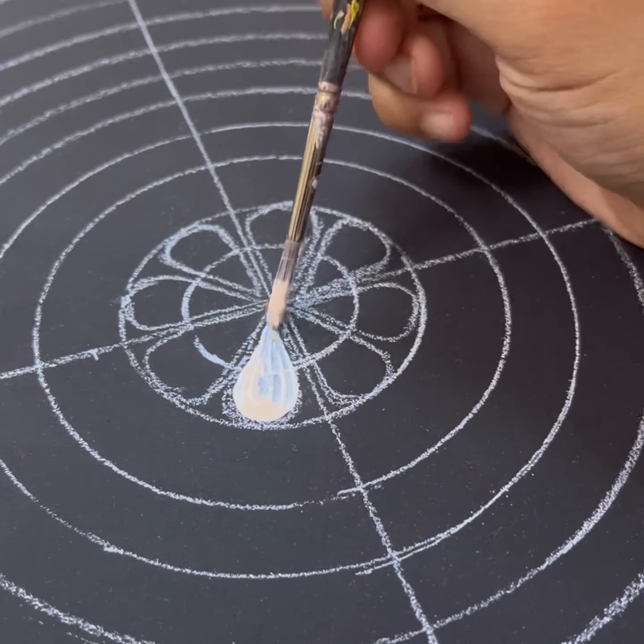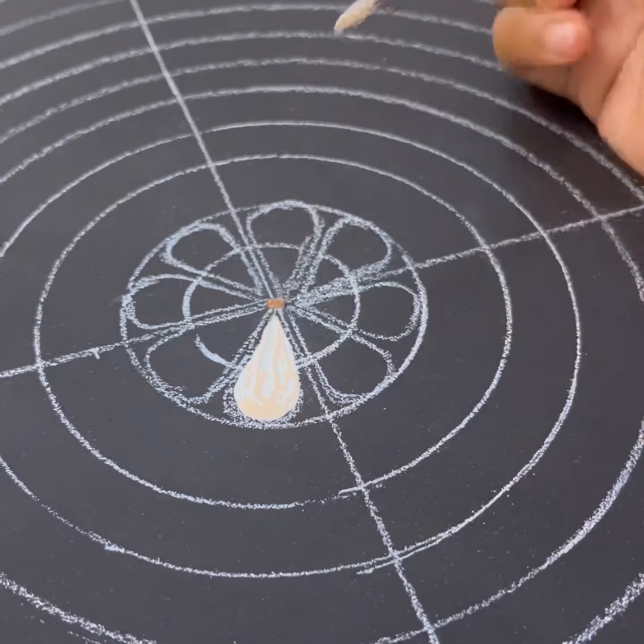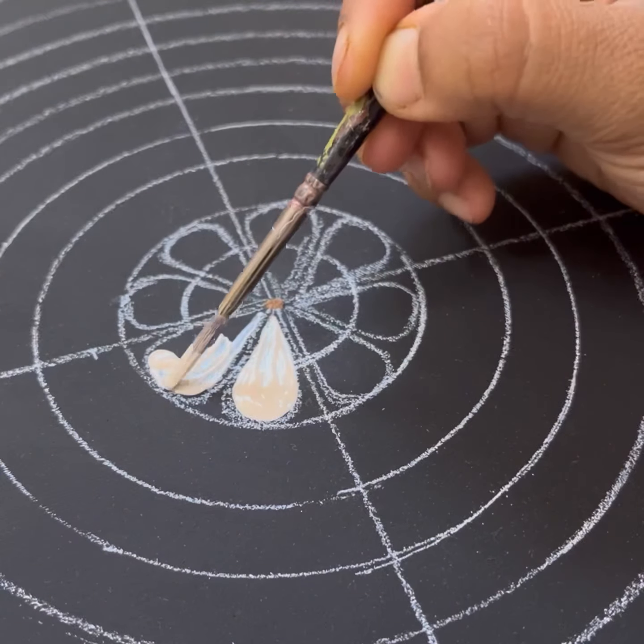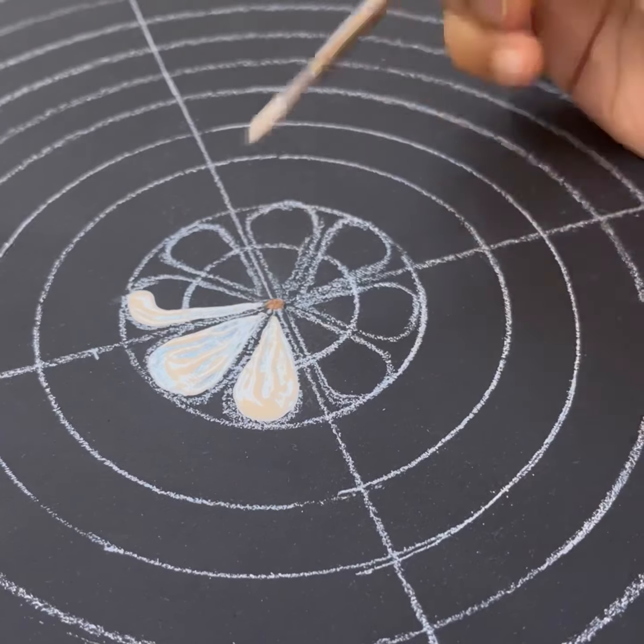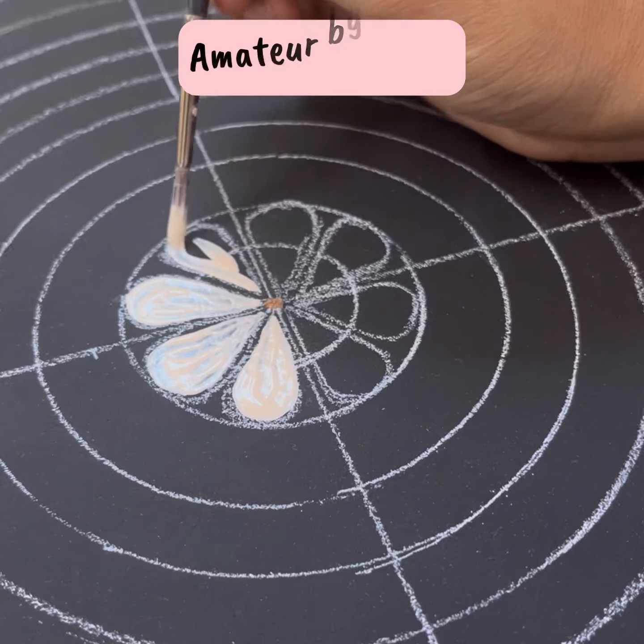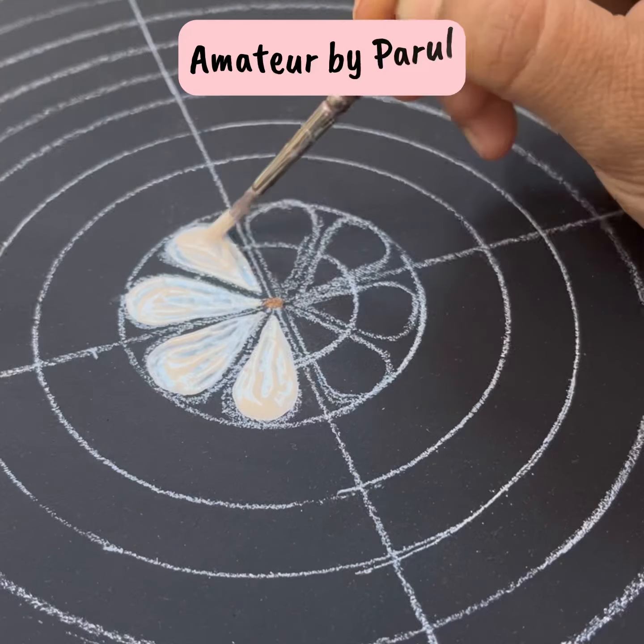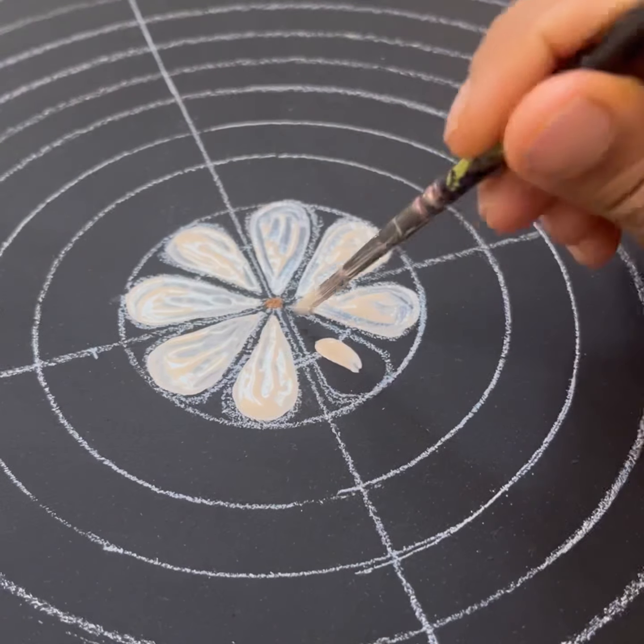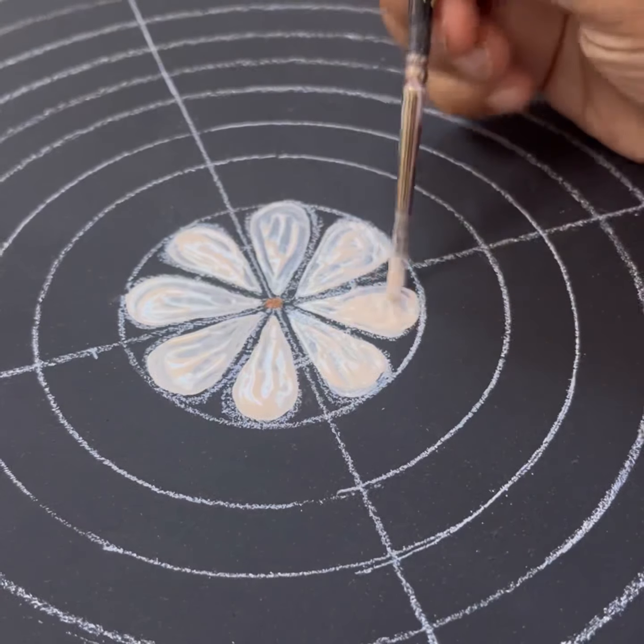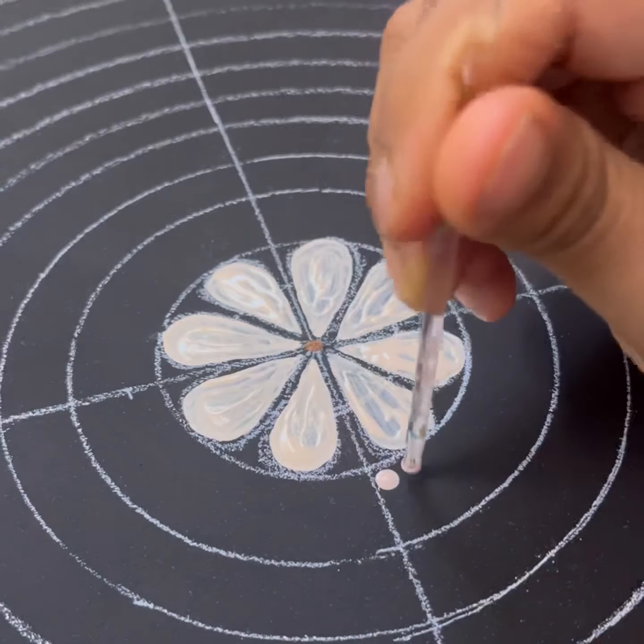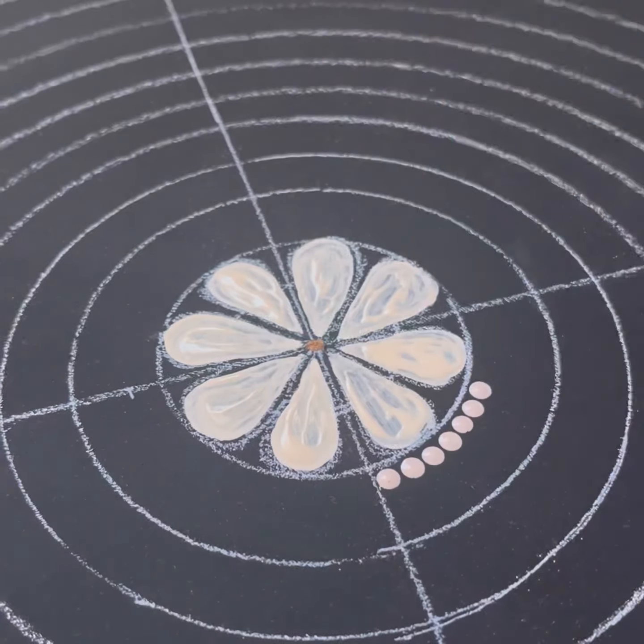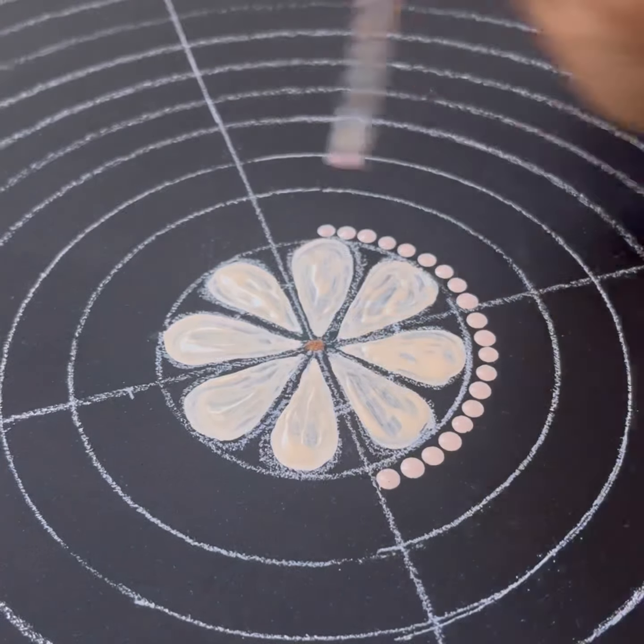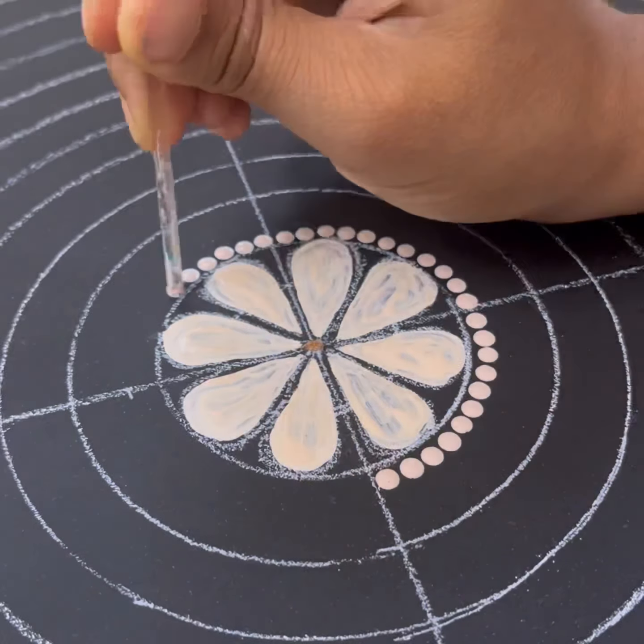I'll start with making a flower on the center of the MDF board. As you can see in the video, I'm making petals of a flower and then coloring them using beige color using a thin brush. I'll cover the flower using smaller dots using darker shade of beige color as you can see in the video.